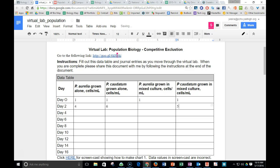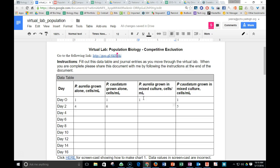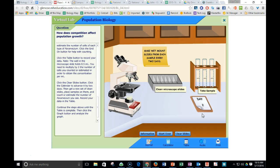Five of caudatum. And then how many of the aurelia? One, two, three of the paramecium aurelia in the mixed culture where they're together. And then go back, clear the slides.